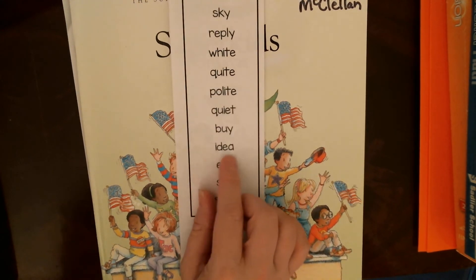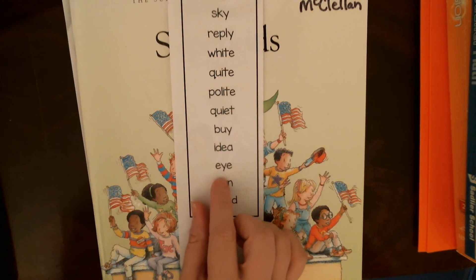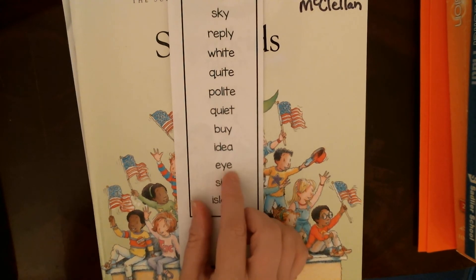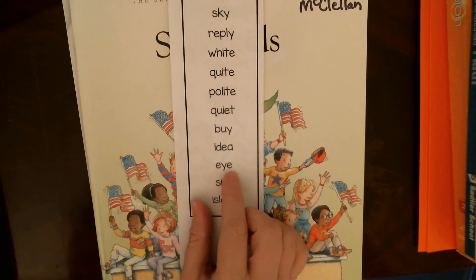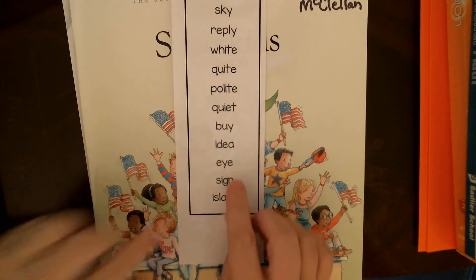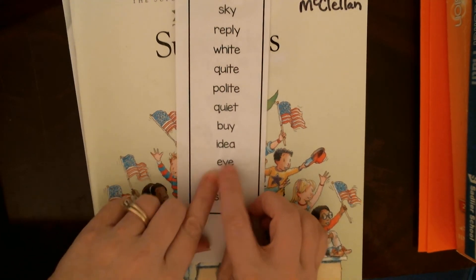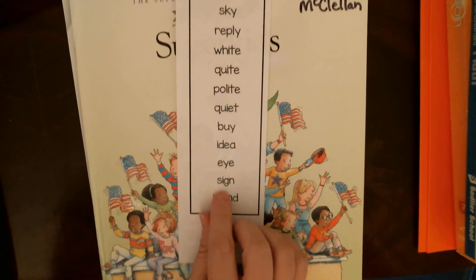This is the word idea. You have an idea. That's a thought. This is the word I like your eye that you see with. And I always remember how to spell this one because it looks like two eyes and a nose.